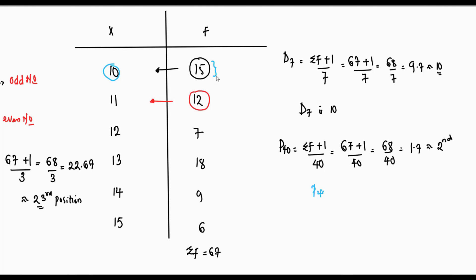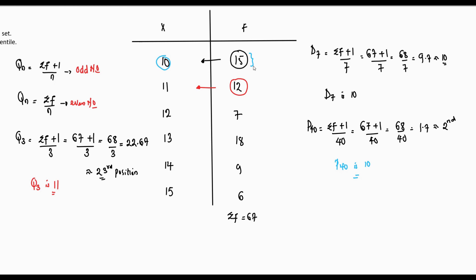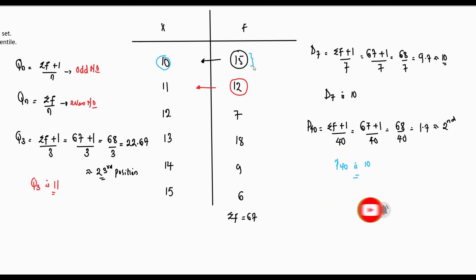And this is how we get the quartiles, the decile, and the percentile of our data sets when it is grouped based on class. If you learned something new and enjoyed this video, I'd appreciate a thumbs up and clicking the notification bell to get notified when I release new videos, which I do at least twice a week. Thanks for making it to the end — see you in the next one. Bye for now.